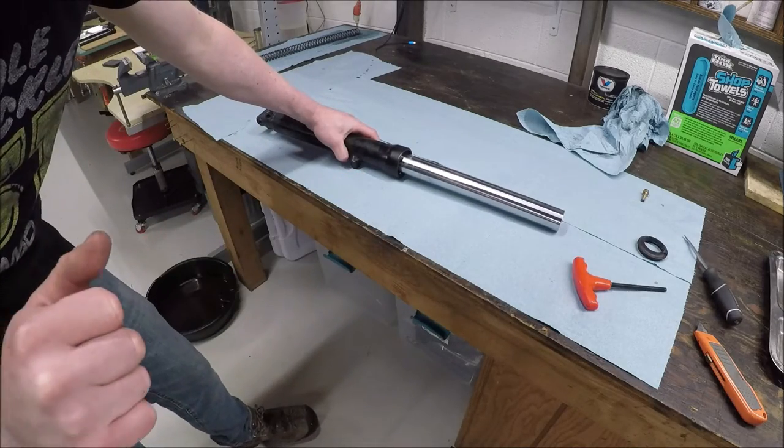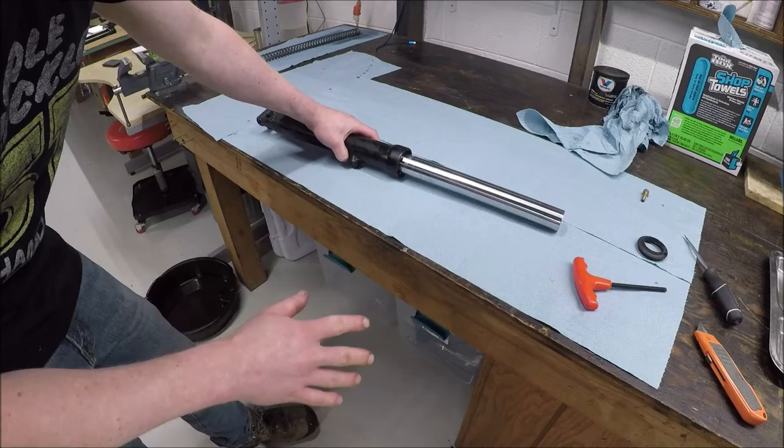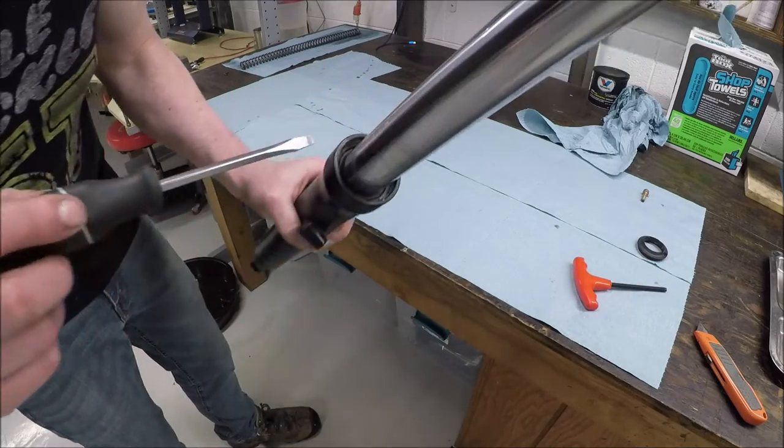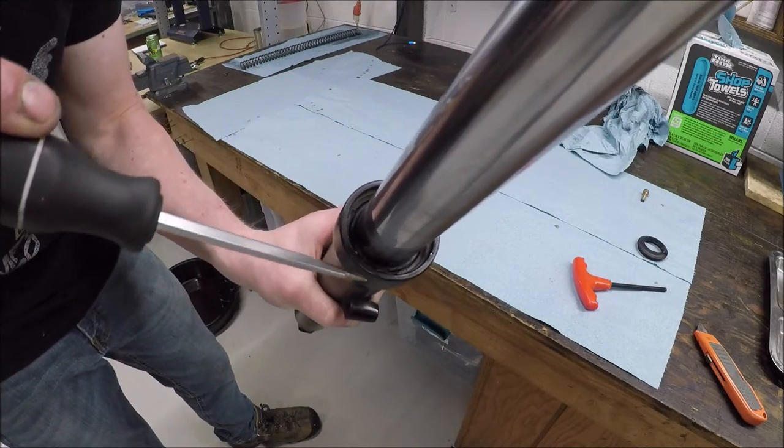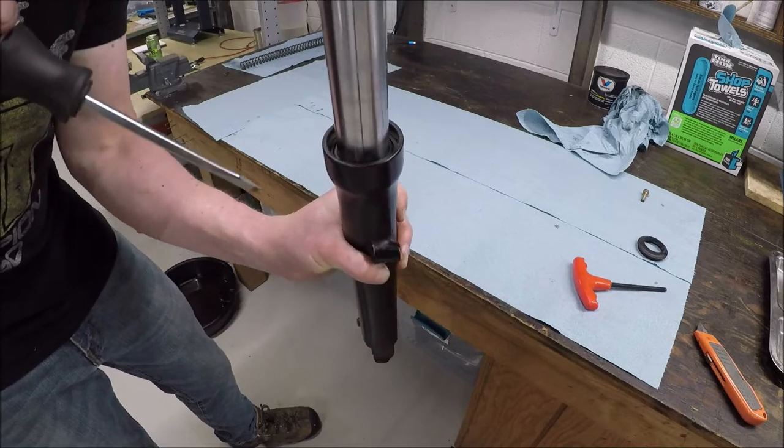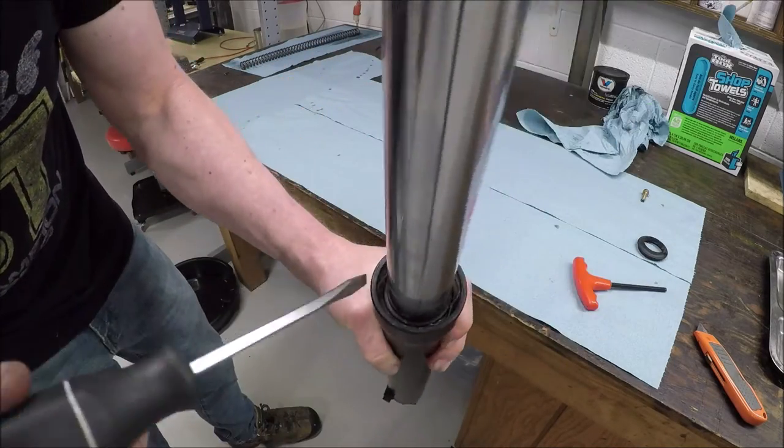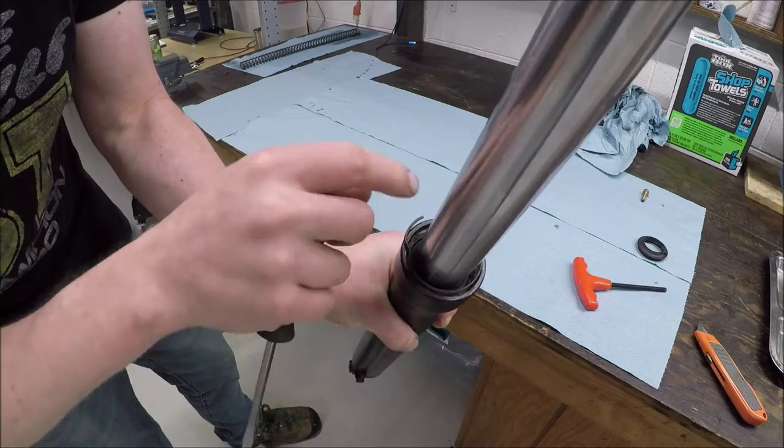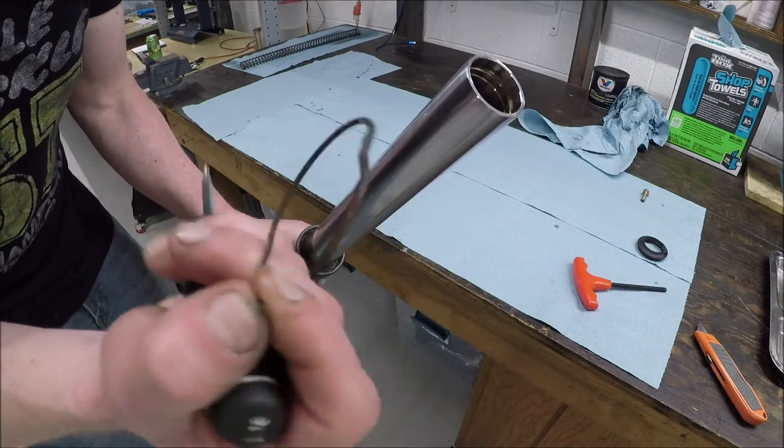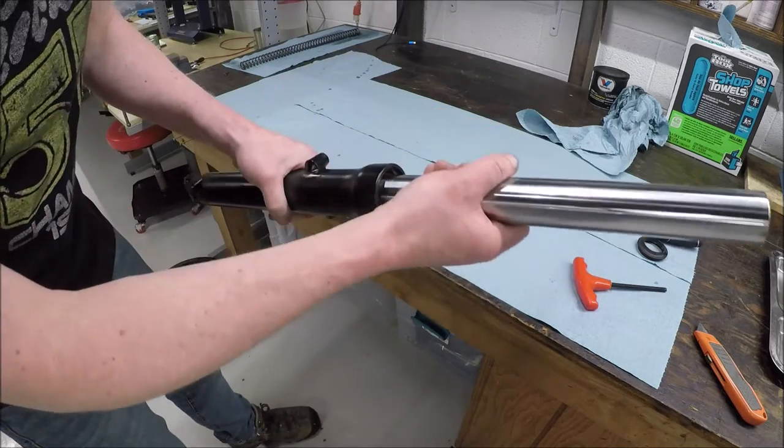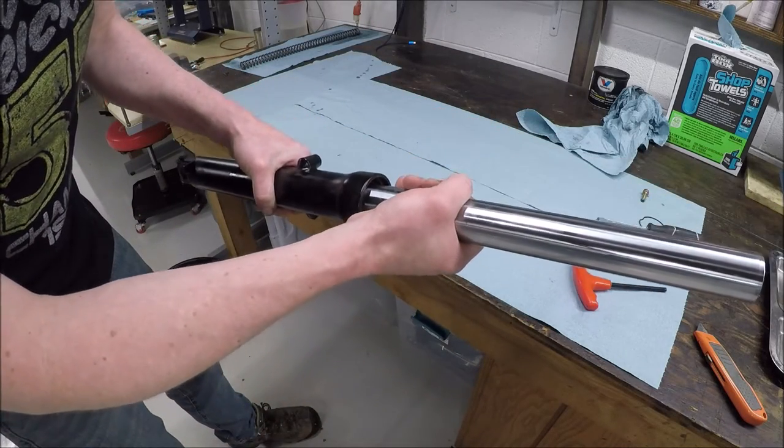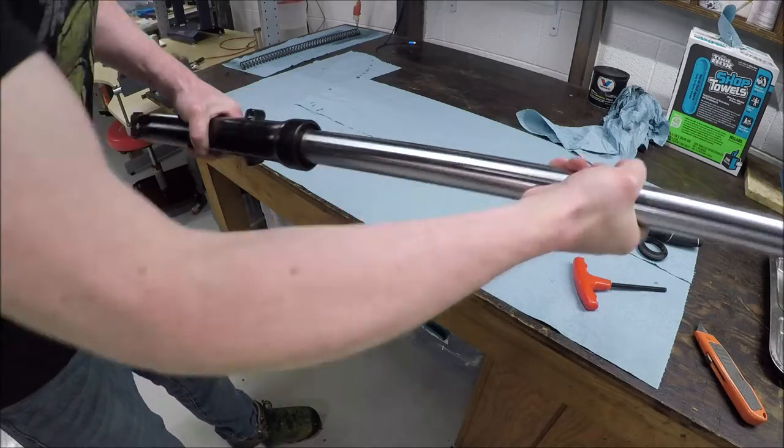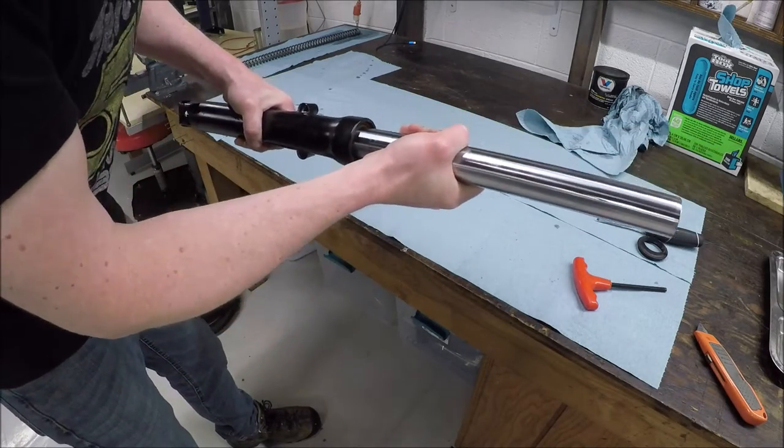The only fun part about doing a fork seal replacement is this part. Oh, shit, I'm jumping the gun. There's a circlip that's going to make that part not really fun. All right, there is a circlip right there. It usually gets a little bit rusty, crusty. With a screwdriver, again, I don't want to nick that stanchion up. I'll just lift that thing up right there. There's my circlip. Now, I can do the fun part. So, this part gets messy. Should only take a couple pulls, and then I will pull the stanchion apart from the lower. There it goes.